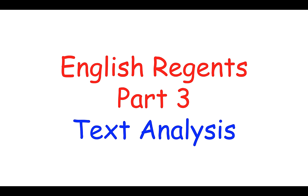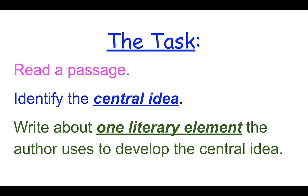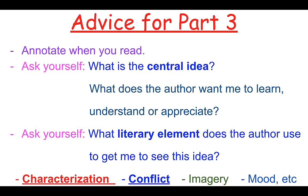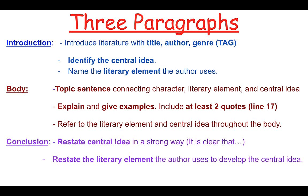English Regents Part 3 is the text analysis. The task is to read a passage, identify the central idea, and write about one literary element the author uses to develop that central idea. My advice: annotate when you read the text. Ask yourself while reading, what is the central idea? What does the author want me to learn, understand, or appreciate? Ask yourself what literary element the author uses to get you to see this idea. Characterization is usually my favorite because every story will have characterization, and every story will have a conflict, but there are many literary techniques you can choose from. The directions say to write a two- to three-paragraph essay, but I always suggest three paragraphs — intro, body, conclusion.